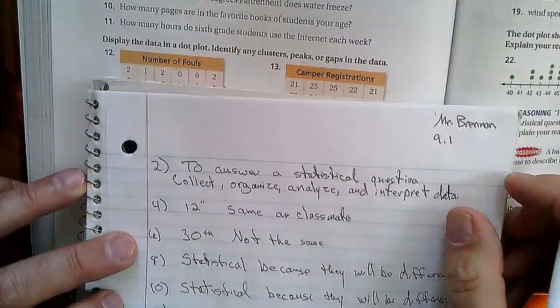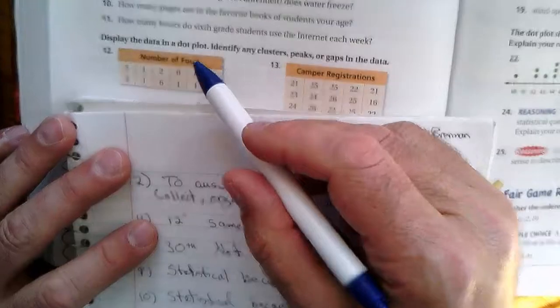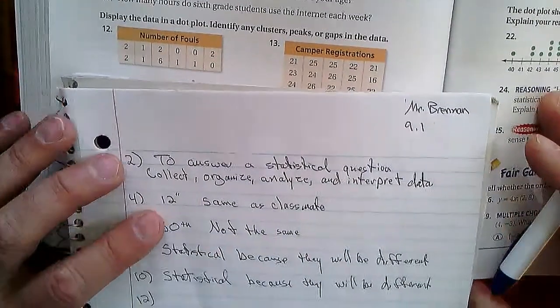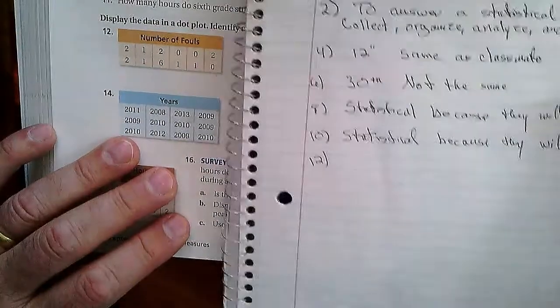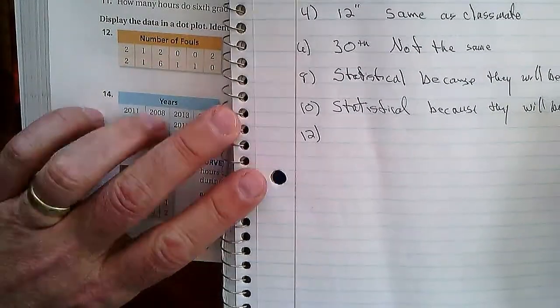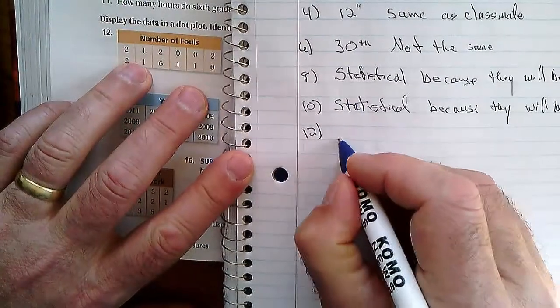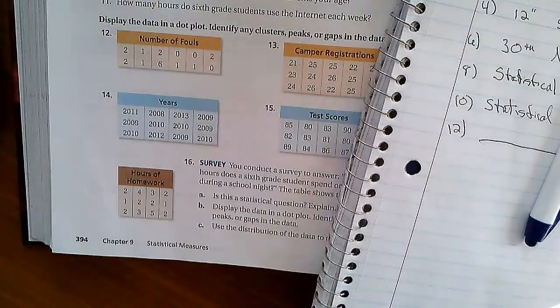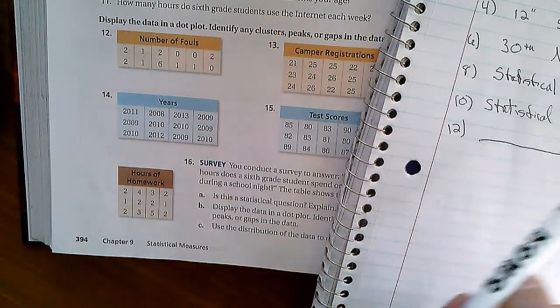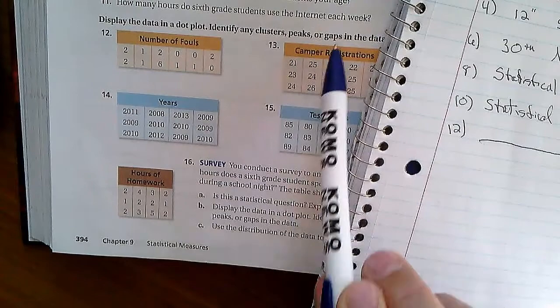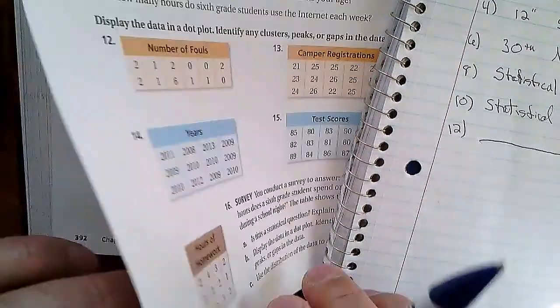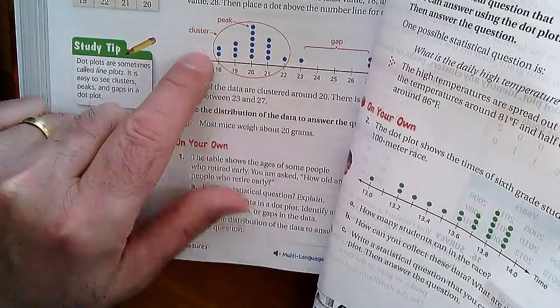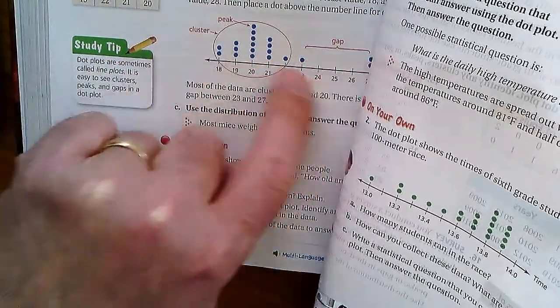Number twelve: display the data in a dot plot, identify any clusters, peaks, or gaps in the data. On the Google form I said don't worry about making a dot plot, but for us here you need to if you're going to answer the questions. This is really pretty easy vocabulary. You know what a cluster is, a peak, and gaps. A peak is something that's poking out, there's a cluster with these guys together, there's a gap where there's none of them.